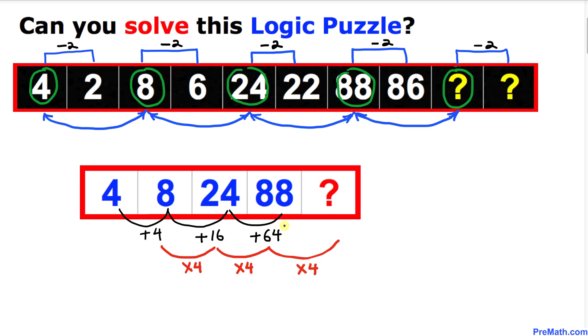So thus our next difference between these two numbers is going to be 64 times 4, which means this number is going to be 256.